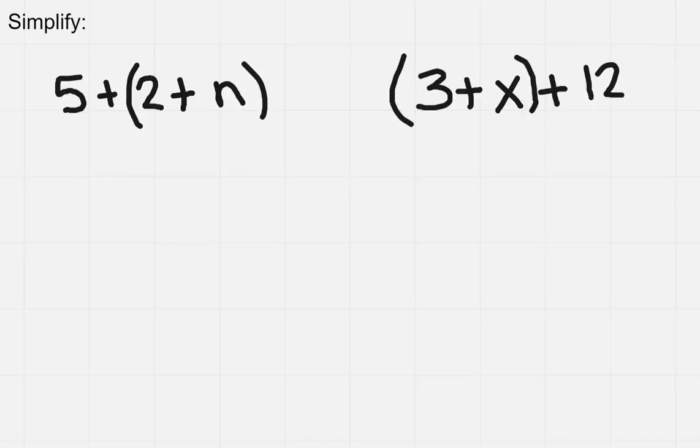We want to figure out how to simplify each one of these expressions. You're going to use either the associative or the commutative properties in order to do this.